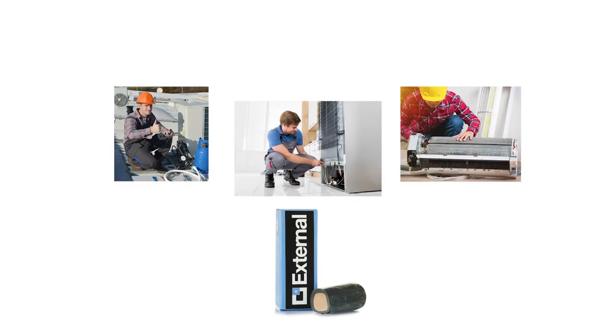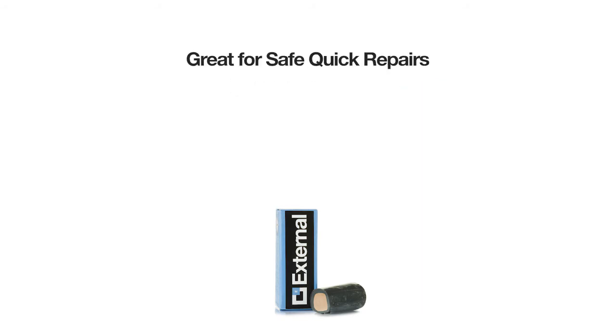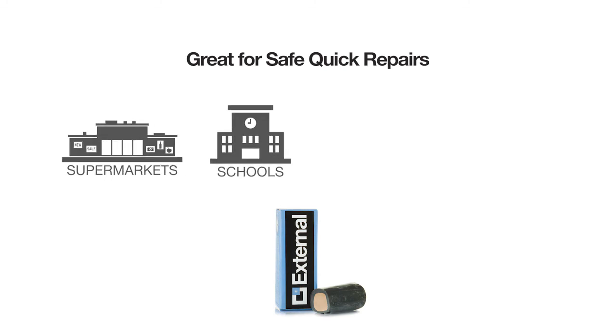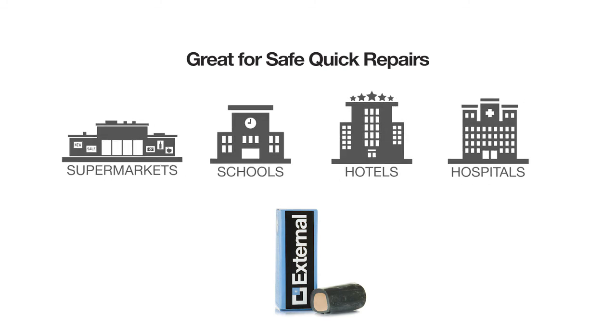External is a great solution when the coil is around the back corner, either for a temporary fix or a permanent repair. It is great for a safe, quick repair in supermarkets, schools, hotels, and hospitals when you can't have a flame, and for older units that must be up and running at all times.